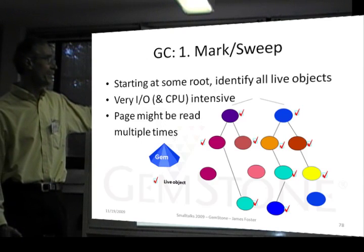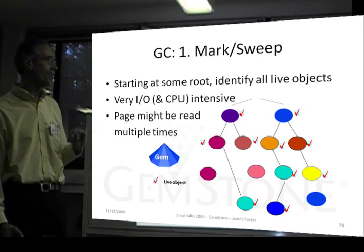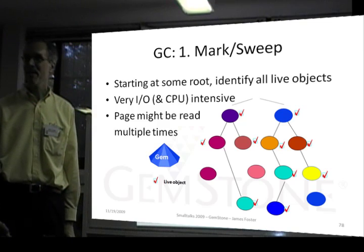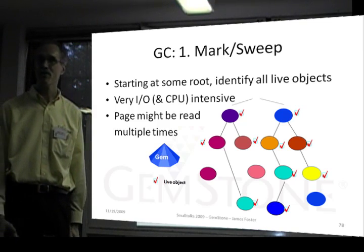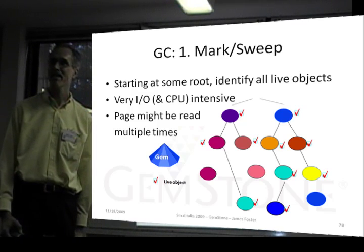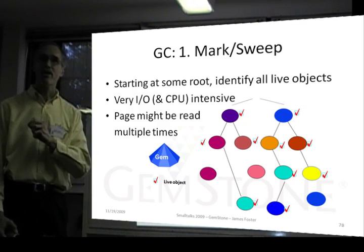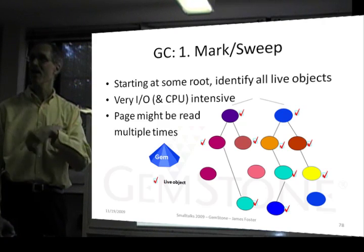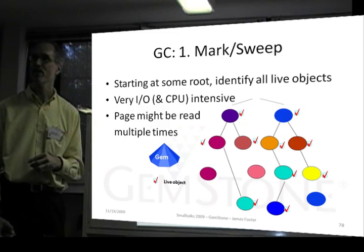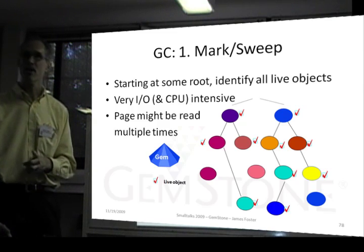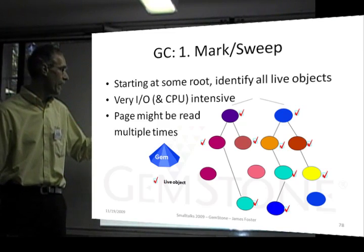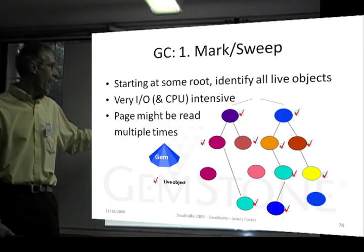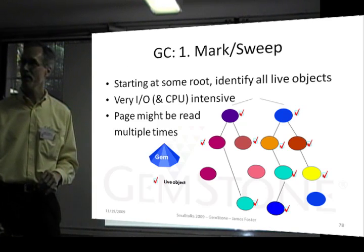Mark sweep starts at the root to identify all referenced objects. This is very IO and CPU intensive because we have to read pages from the disk, and we're reading pages that might not otherwise be referenced. When you're not doing garbage collection, the things in the shared page cache are likely to be things that someone's used recently. If you're doing garbage collection, the things in the shared page cache are things that you just were looking at, and a page might have to be read multiple times.